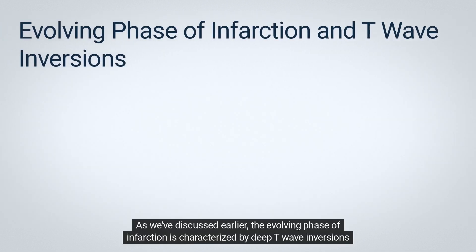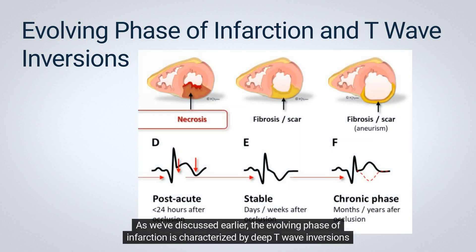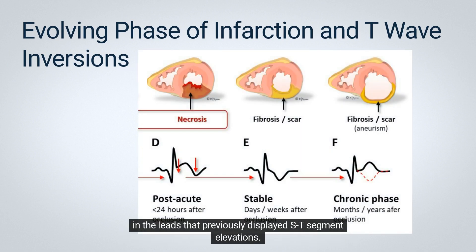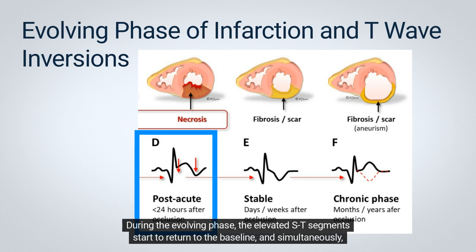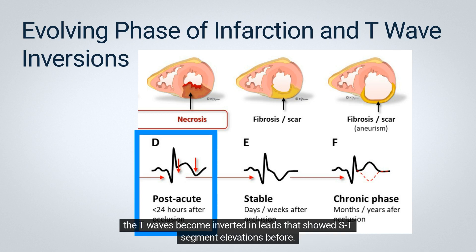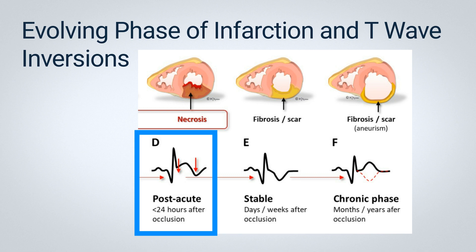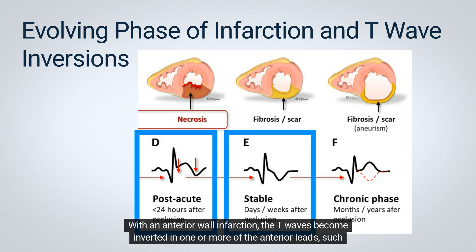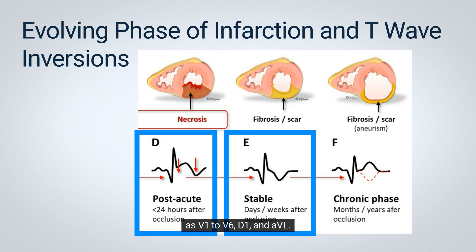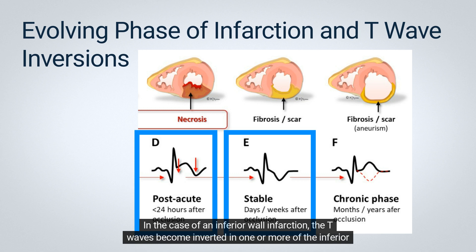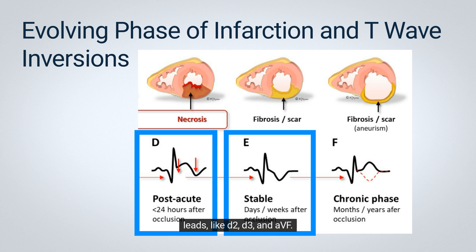As we discussed earlier, the evolving phase of infarction is characterized by deep T-wave inversions in the leads that previously displayed ST-segment elevations. This phase usually occurs hours or even a few days after the acute phase. During the evolving phase, the elevated ST-segments start to return to baseline, and simultaneously the T waves become inverted in leads that showed ST-segment elevations before. With an anterior wall infarction, the T waves become inverted in one or more of the anterior leads, such as V1 to V6, D1, and aVL. In the case of an inferior wall infarction, the T waves become inverted in one or more of the inferior leads, like D2, D3, and aVF.